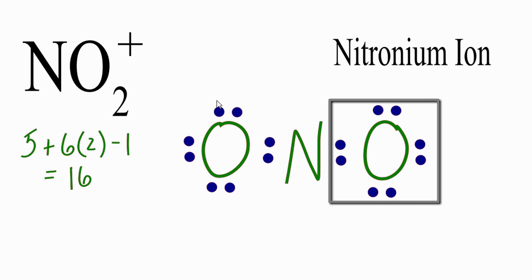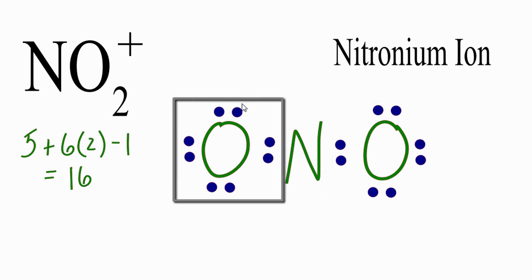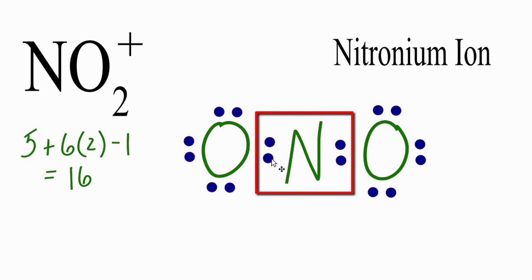Oxygen has an octet, this oxygen has 8 valence electrons, an octet, but the nitrogen in the center only has 1, 2, 3, 4 valence electrons.